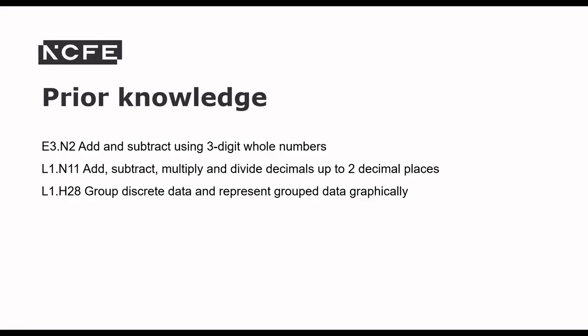From the subject content statements, prior knowledge from entry level three includes adding and subtracting using three-digit whole numbers. From level one: add, subtract, multiply and divide decimals up to two decimal places. Also from level one, learners need to group discrete data and represent grouped data graphically, as understanding how data is grouped will help them manage grouped data later.